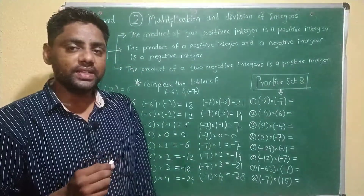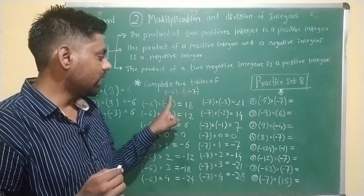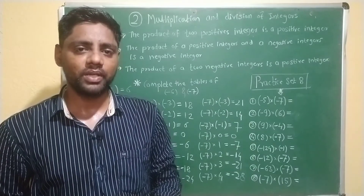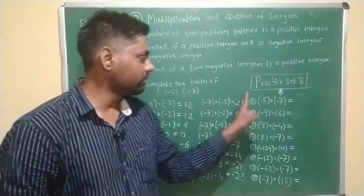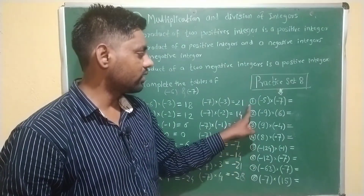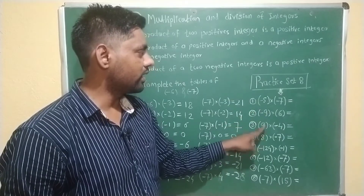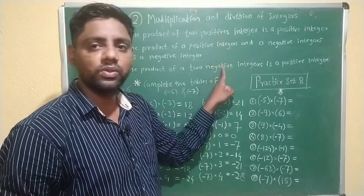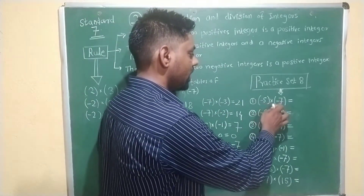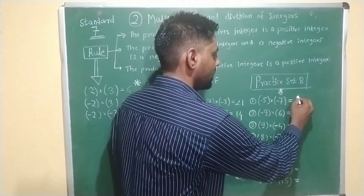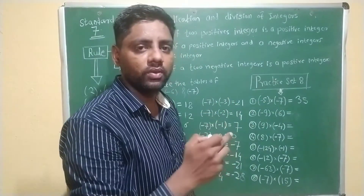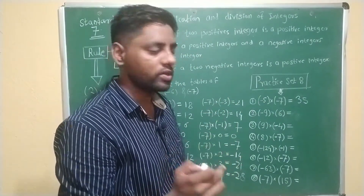In such a way we complete the table of minus 6 and minus 7. Now we take more examples based on practice set 8. In practice set 8, eight examples are given. You have to find the multiplication of two integers, and knowing the three rules, you can solve them very easily. First example: minus 5 into minus 7 is plus 35, by using the third rule — the multiplication of two negative integers is always a positive integer.